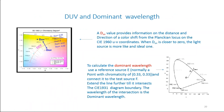DUV provides information on the distance and direction of a color shift from the Planckian locus on the 1960 UV diagram. When DUV is closer to zero, the light source is more like an ideal blackbody. If it falls above the blackbody curve, DUV is positive; below, it is negative. Values shown are +0.02, +0.01, 0, −0.01, −0.02.